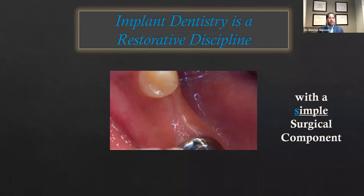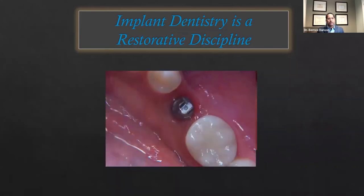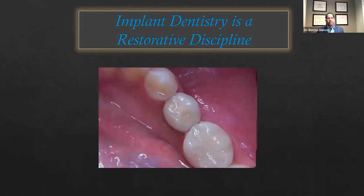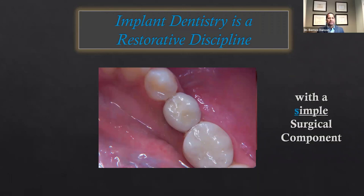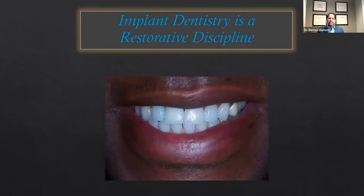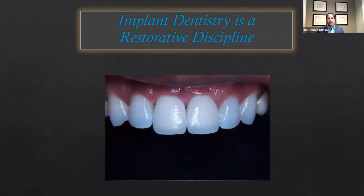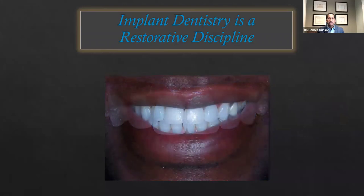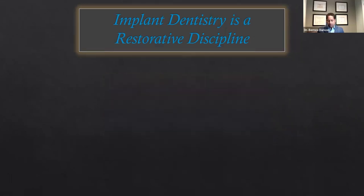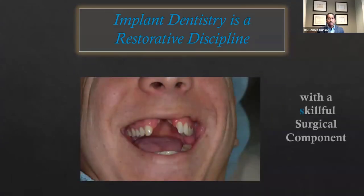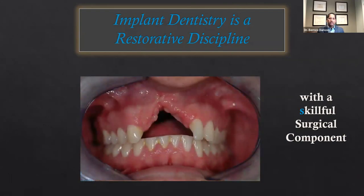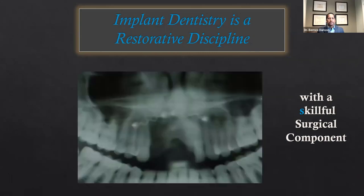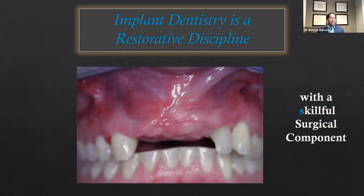Sometimes it has a simple surgical component — if I've got adequate bone with adequate height, width, and length, I can place an implant and create a restorative solution. In the aesthetic zone, we call it a restorative discipline with a challenging surgical component, so we'll explore cases where we have to manage that challenge. And sometimes implant dentistry requires advanced skillful surgical skills, because we owe it to our patients in those circumstances and situations to be able to restore them.